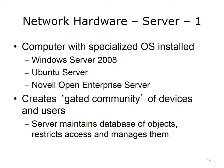Another network device is a server, which is a computer with a specialized operating system installed. Server examples are Windows Server 2008 or 2003, Ubuntu Server, and Novell's Open Enterprise Server. A server creates what we refer to as a gated community of devices and users. A server maintains a database of its objects — objects being devices and users. It restricts access to the network to only authorized devices and users, and manages all of these objects. In other words, a server determines which users can log on to the network, if at all. A server can also enforce rules that determine who can print to a specific printer.